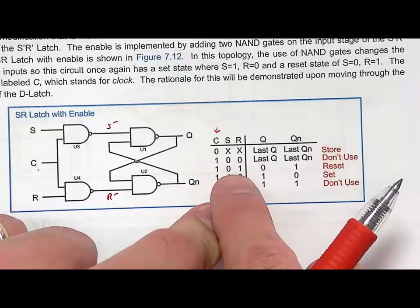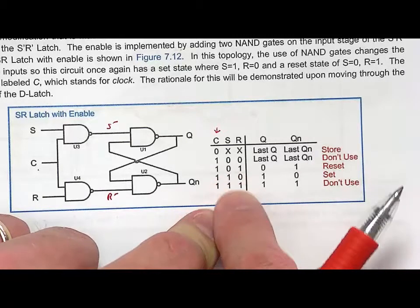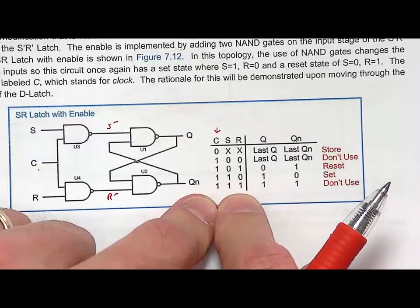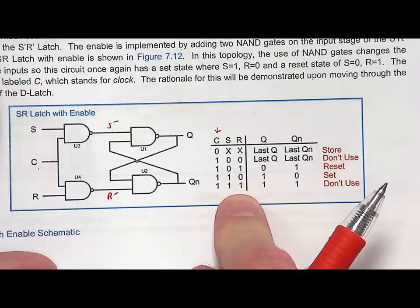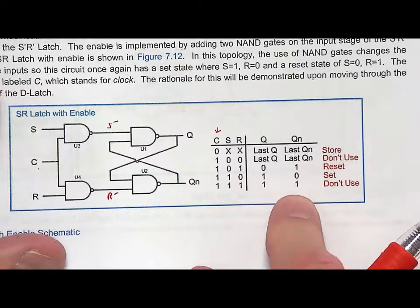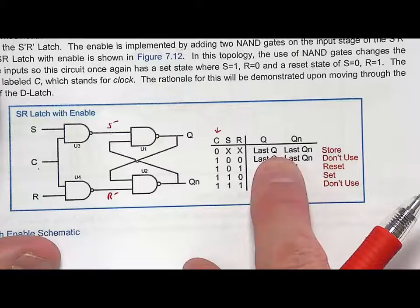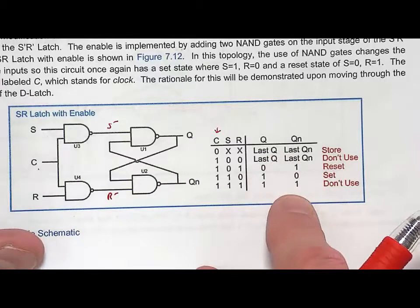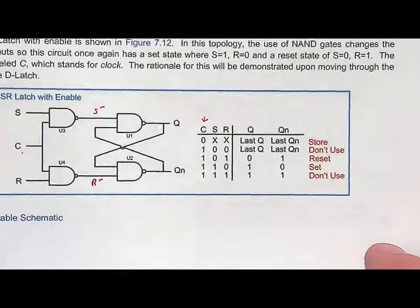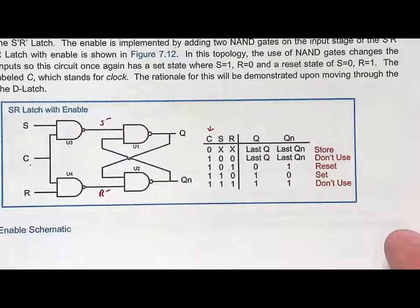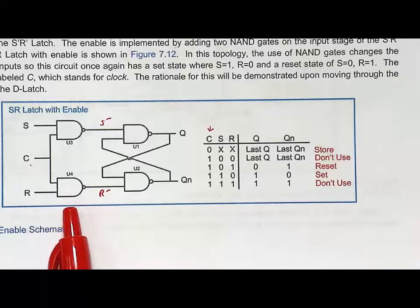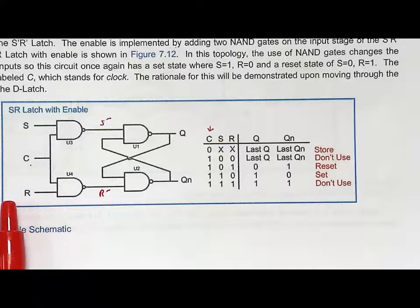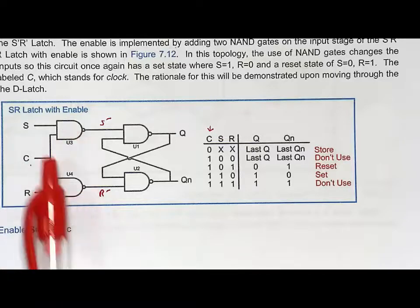The forbidden state is when C is one and both S and R are one: that puts the S-bar R-bar latch into a state where both outputs are ones. That's fine while driven, but when you release them and go into a store state, you have no idea where Q and QN will end up. So this is the next interim storage device on our way to the D flip-flop — the SR Latch with Enable. The enable behavior is why we had to build the S-bar R-bar latch: we want S and R to have positive polarities, but the NAND enable circuit inverts them during normal operation.